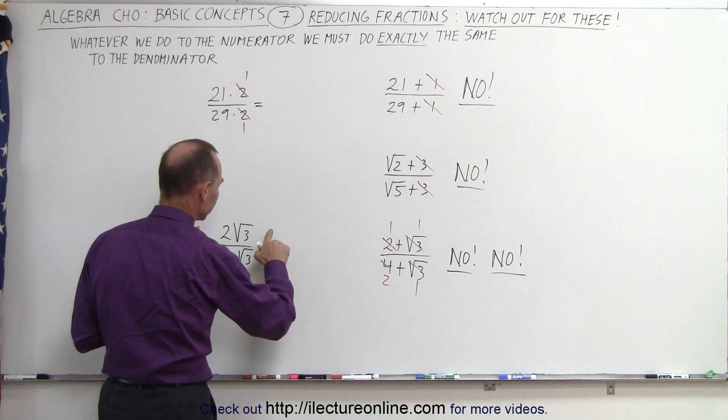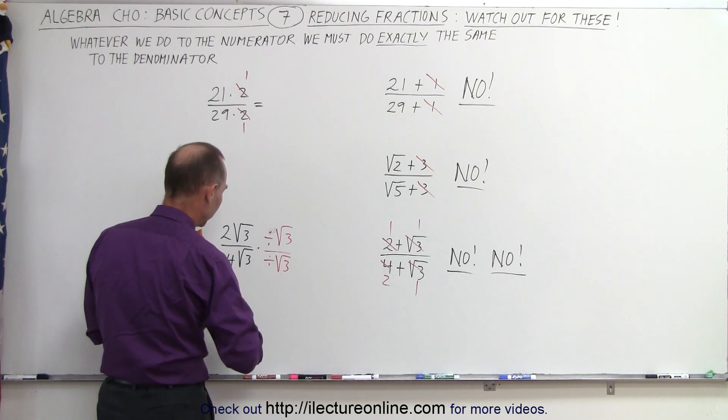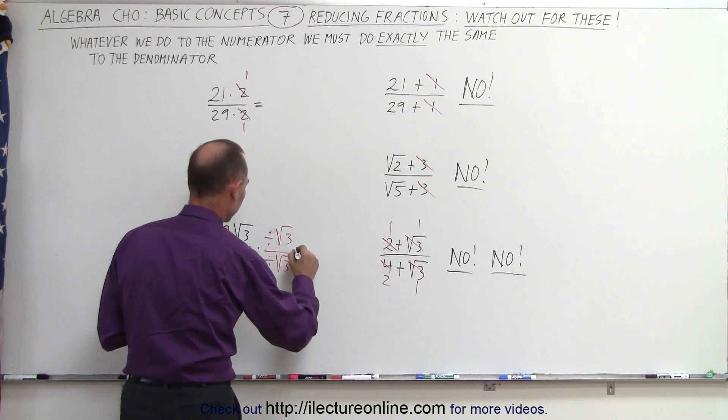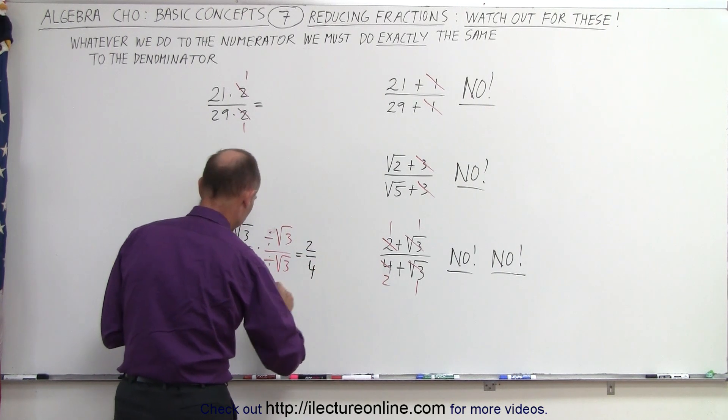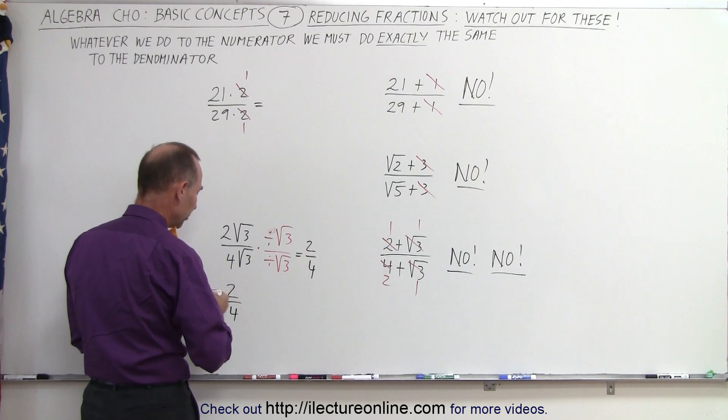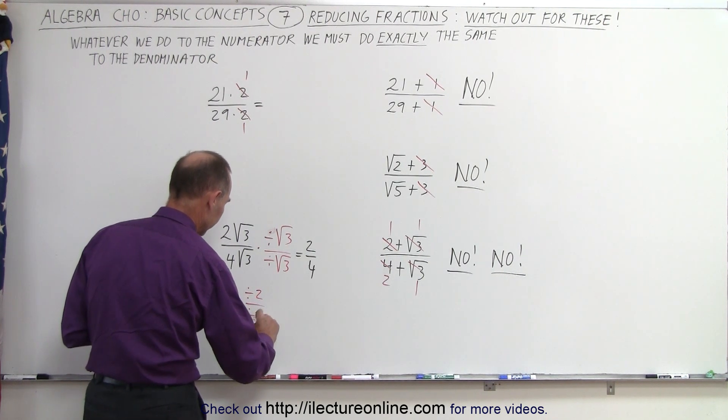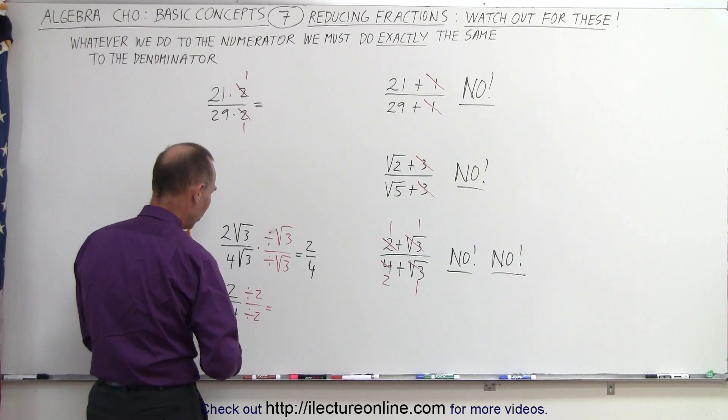Divide both the numerator by the square root of 3 and divide the denominator by the square root of 3. So first of all, this would become equal to 2 over 4, and then we can take the number 2 over 4 and say we can divide both the numerator and the denominator by 2. And we end up with 1 over 2.